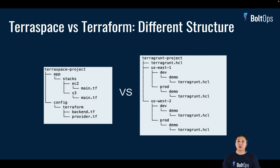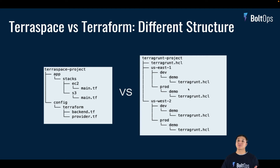There are different project structures. On the left-hand side you see the TerraSpace project structure — you have the concept of apps and stacks, so there's an EC2 stack and S3 stack with main.tf, and a config Terraform folder with backend.tf and provider.tf. TerraSpace takes the config Terraform folder files and merges them with whatever stack you're deploying — EC2 or S3 in this case. Terragrunt works differently: you have Terragrunt HCL files which source in common modules from repos, walking up the directory tree, pulling in additional configurations, and then deploying that module directly.